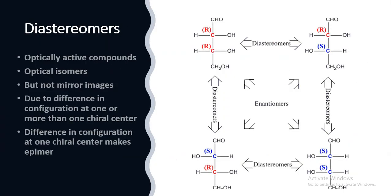Diastereomers are optical isomers but they are not mirror images of each other — meaning they are not enantiomers — due to differences in configuration at one or more stereocenters. A difference in configuration at only one chiral center makes a compound an epimer of the other. Here we show that compounds that are mirror images of each other are enantiomers, while compounds with RR and RS configurations are diastereomers. We will study R and S in the next slides.